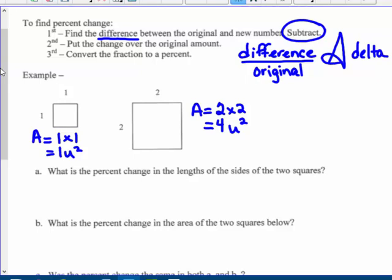So difference over the original. So the area went from 1 to 4, so 4 minus 1. I'm always going to take the bigger one, subtract the smaller one, over where it started. So the area, 4 minus 1 would be 3 over 1. Then when I change that to a decimal of 3, changing it to a percent, the area increased by 300%.